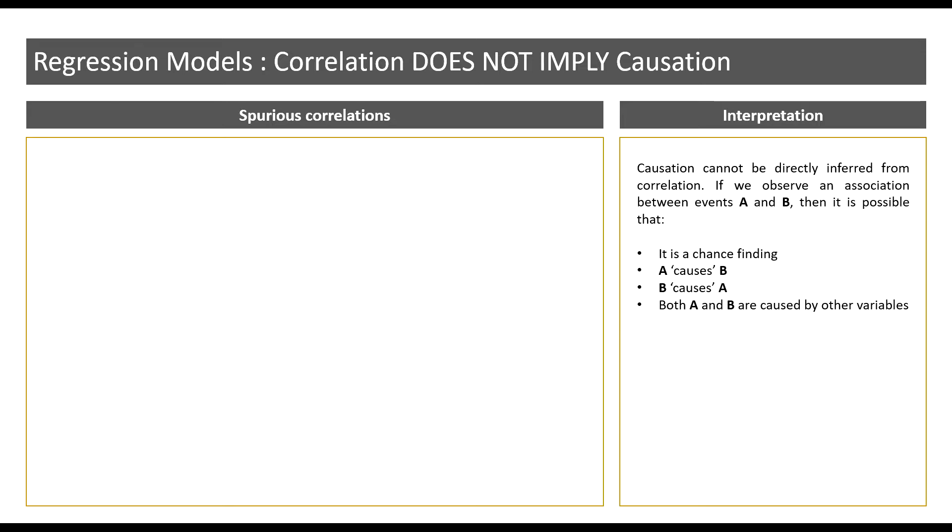The correlation coefficient just tells us the degree of association between the two variables. It does not describe the relationship between these two variables. Now let us take a look at a few fun examples.